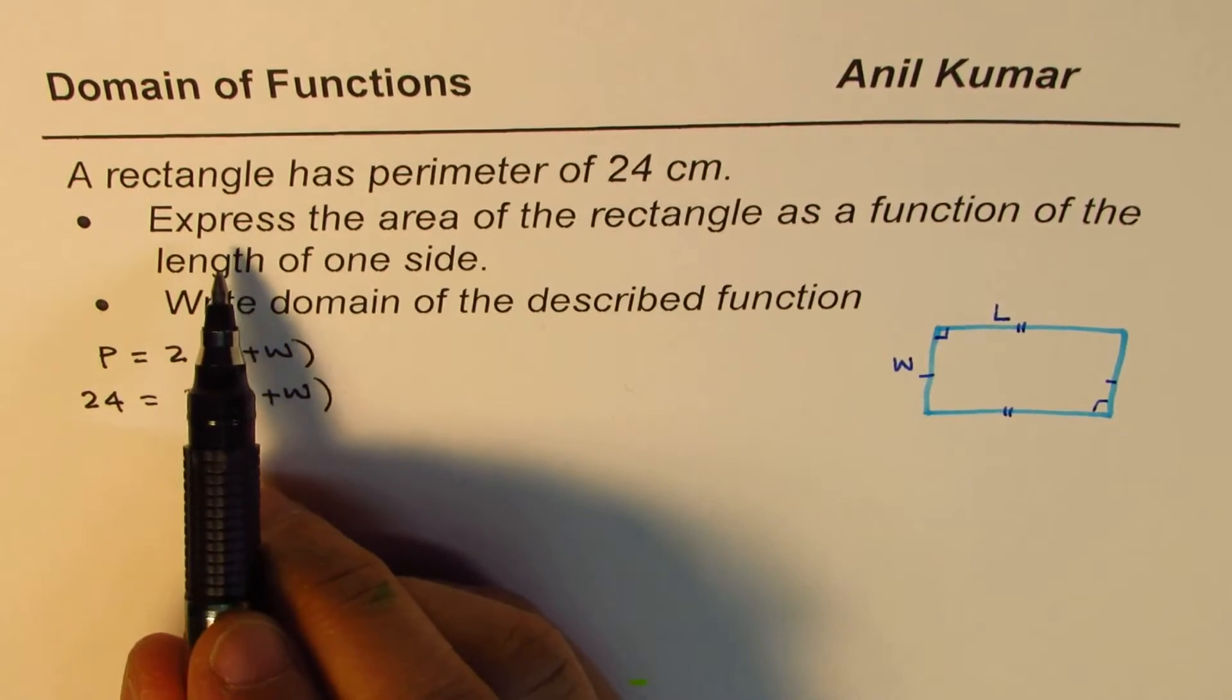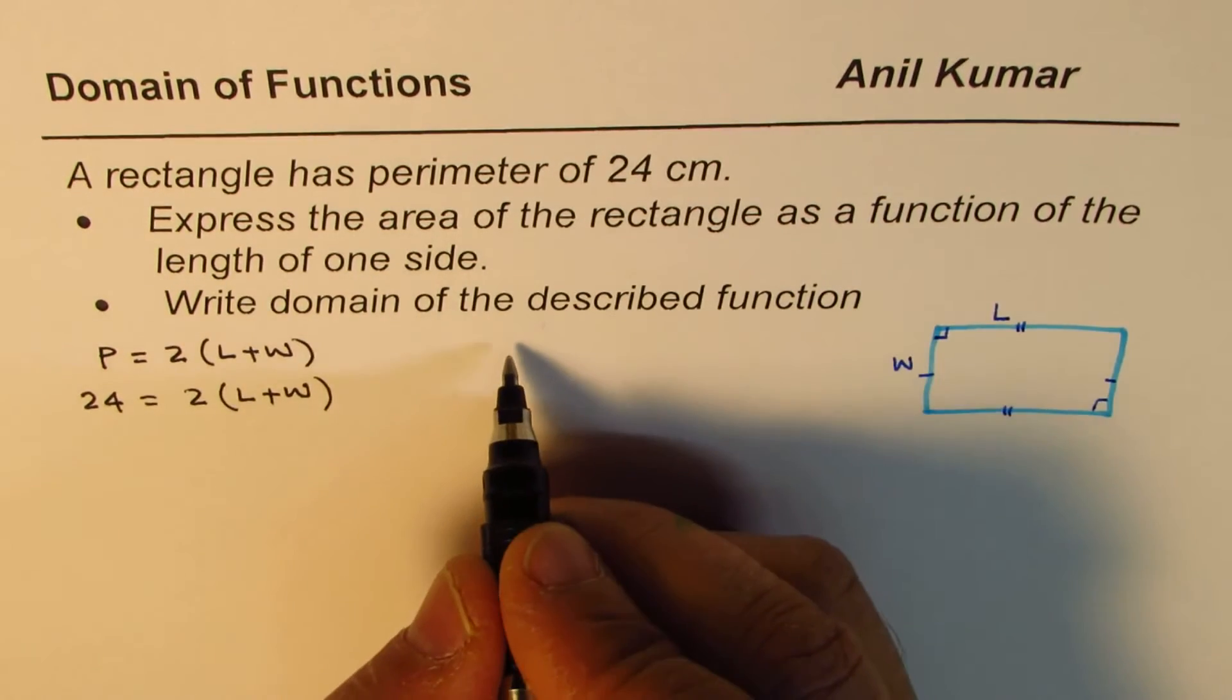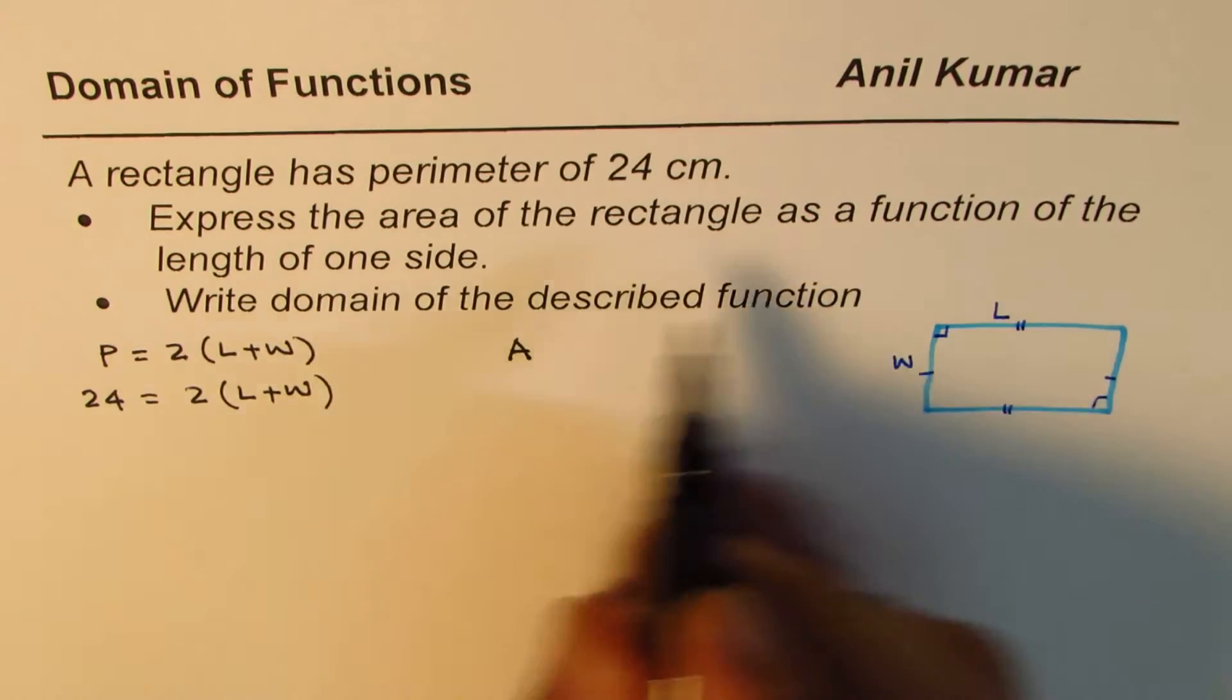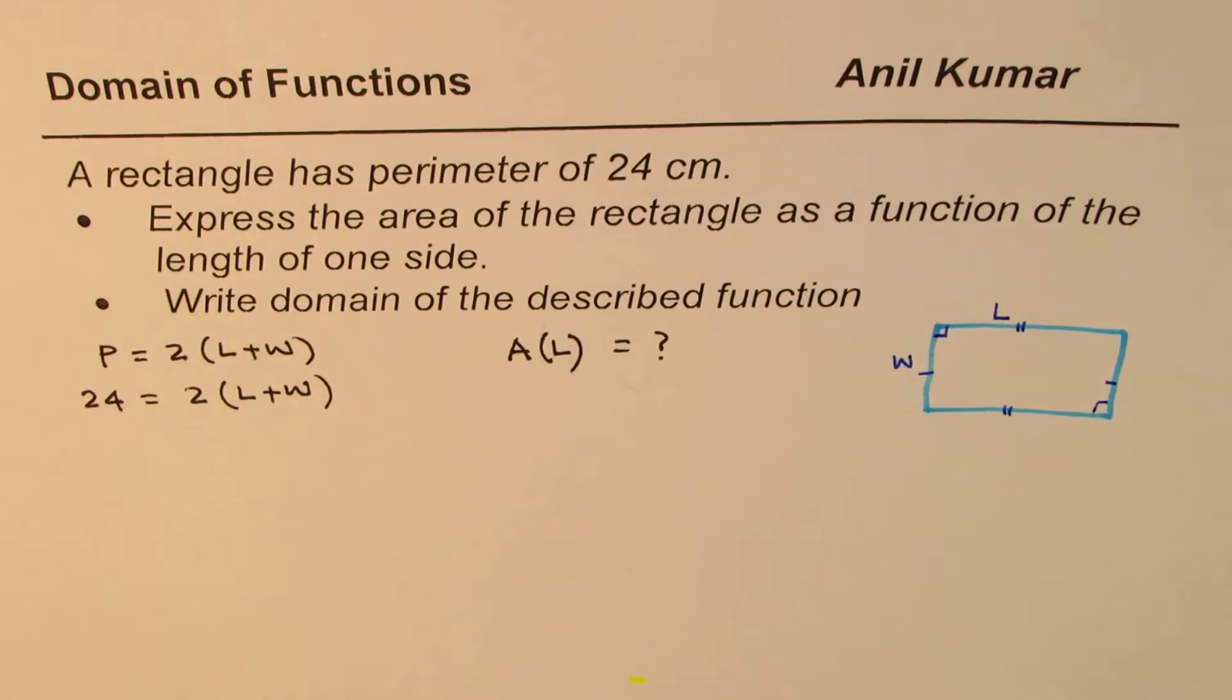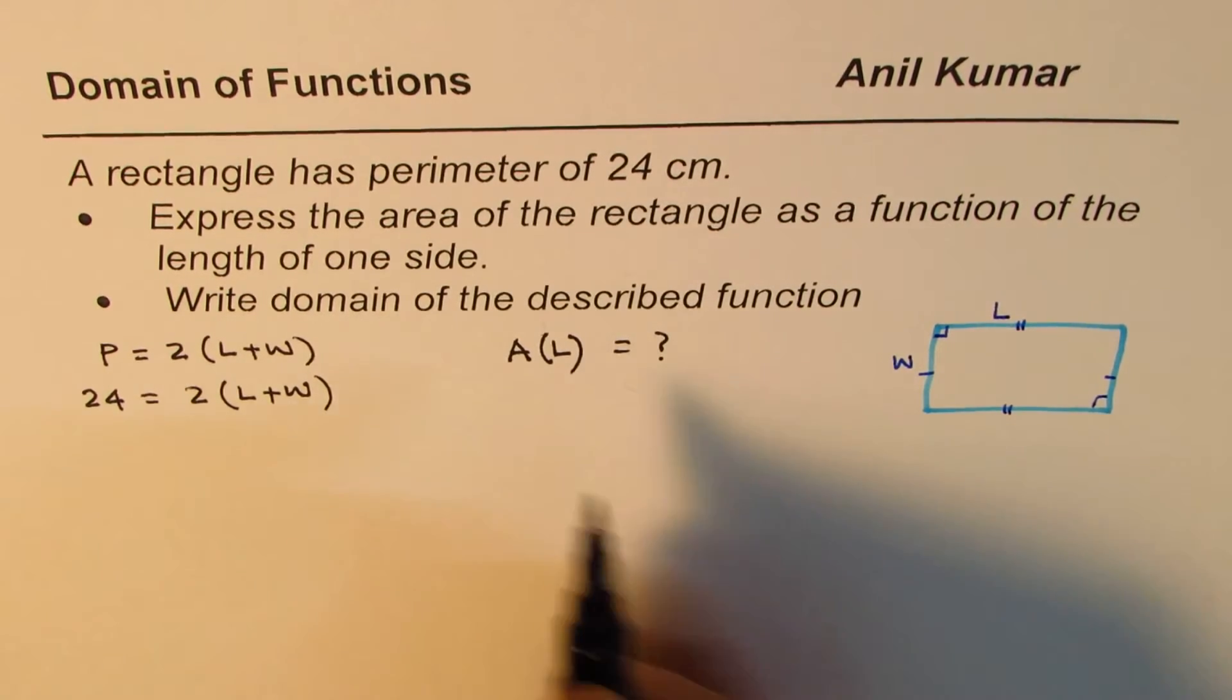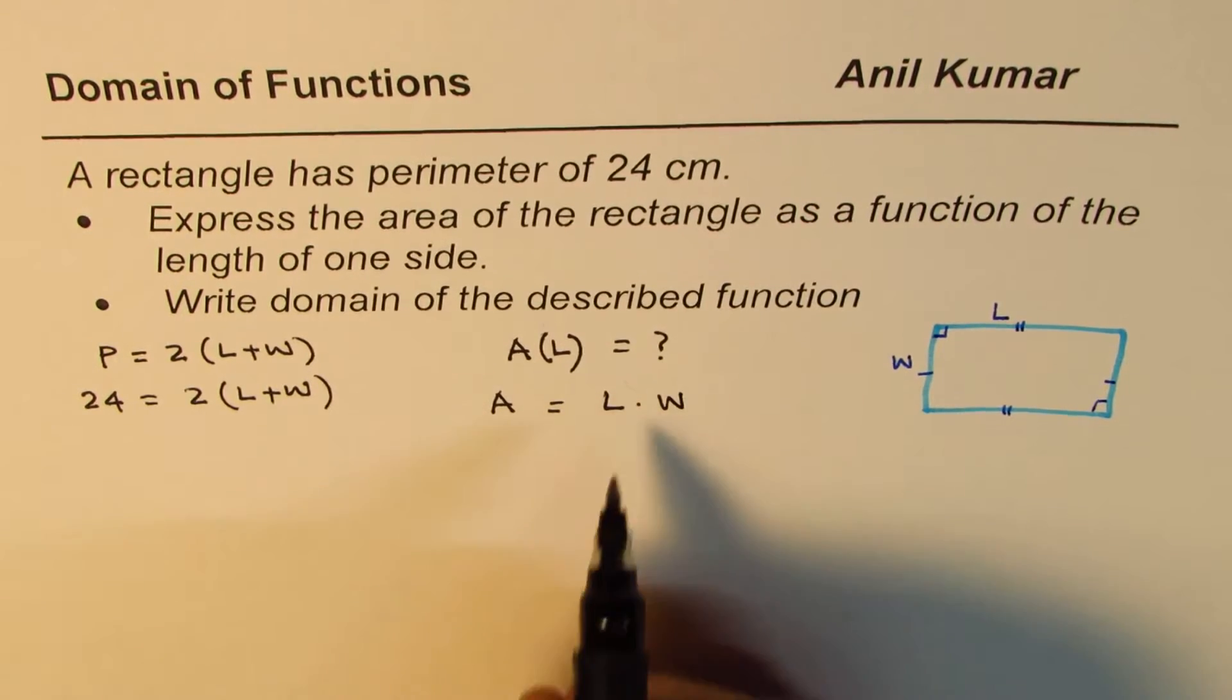And what we need to find is express area of the rectangle as a function of length of one side. So we need area as a function of length. That's the objective. Now what is area of a rectangle? Well, area of the rectangle is actually equals to length times width.